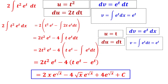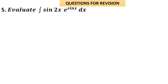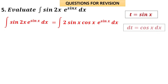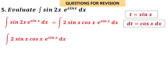Problem 5: integral of sin(2x)·e^(sin x) dx. Recall sin(2x) = 2·sin x·cos x. Rewriting the integral, we see that the derivative of sin x (which is cos x) is inside, so substitute t = sin x, dt = cos x dx. The integral becomes 2 times integral of t·eᵗ dt, since sin x → t, e^(sin x) → eᵗ, and cos x dx → dt.